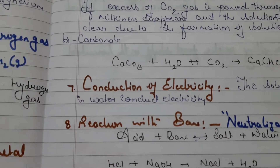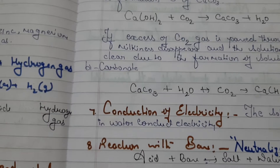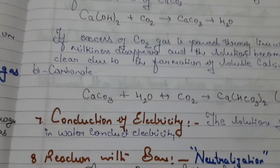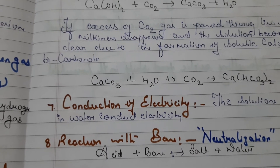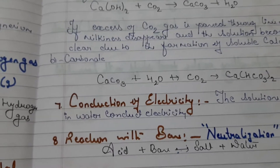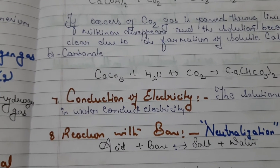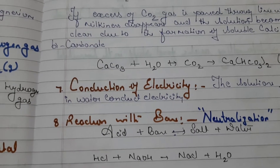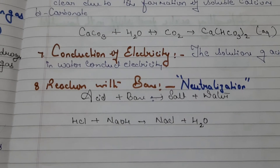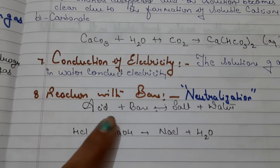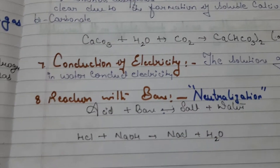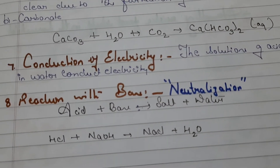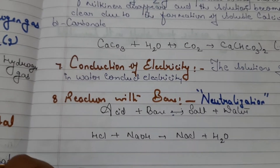Acids acquire the capacity to conduct electricity due to the formation of ions. When acid reacts with base — called a neutralization reaction — it produces salt and water. For example, HCl plus NaOH produces NaCl and water. This kind of reaction is known as a neutralization reaction.